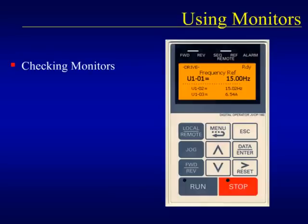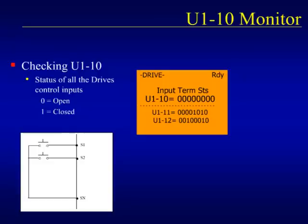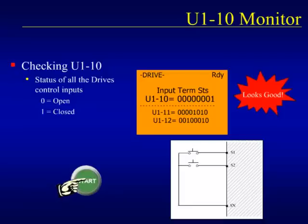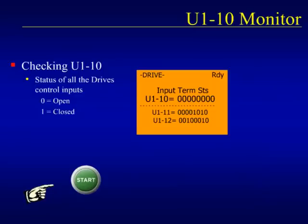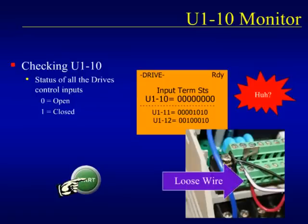Use the arrow keys on the keypad shown here to scroll through the first 18 monitors. Definitions of the monitors can be found in the user and programming manuals for each drive. The monitor that tells us if the drive is seeing the external run command is U1-10, the input terminal status monitor. The far right digit of the U1-10 monitor represents the state of the S1 digital input; the digit to its left represents the status of the S2 digital input, and so forth. If the run command input from the control terminals has been initiated properly, the rightmost digit of U1-10 should turn from a 0 to a 1. If it does not change to a 1, there is something wrong, and it may be necessary to have an electrician check the control wiring to the drive.